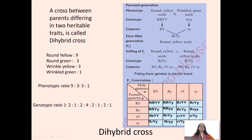Dihybrid cross: a cross between parents differing in two heritable traits. In the parental generation, a round seed with yellow color (genotype RRYY) is crossed with a wrinkled seed with green color (genotype rryy). The gamete of the round yellow parent is RY and of the wrinkled green parent is ry. In the F1 generation, the genotype RrYy gives hybrid round yellow seeds.